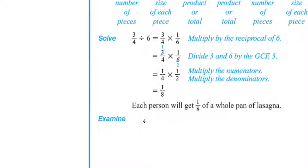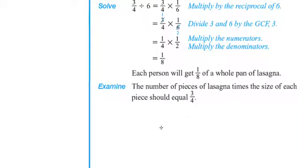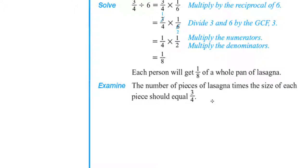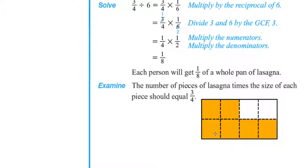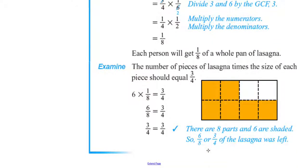To check if our answer makes sense, the number of pieces of lasagna times the size of each piece should equal three-fourths. A diagram is very helpful here. Six times one-eighth equals six-eighths, which equals three-fourths. If you simplify six-eighths further, it is the same as three-fourths. There are eight parts and six are shaded, so six-eighths or three-fourths of the lasagna was left — our answer checks out.